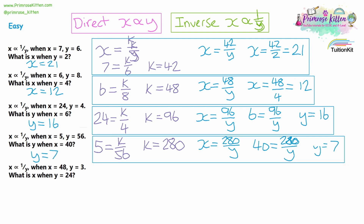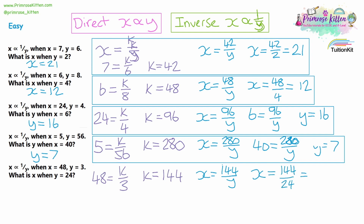Question 5: substituting x equals 48 and y equals 3, we multiply both sides by 3 to get k on its own. 48 times 3 gives k equals 144. Our equation is x equals 144 over y. We're told y equals 24 and want to find x, so x equals 144 divided by 24. Using a calculator, 144 divided by 24 gives 6, so x equals 6. Notice we've gone from finding y back to finding x — you could be asked either one.